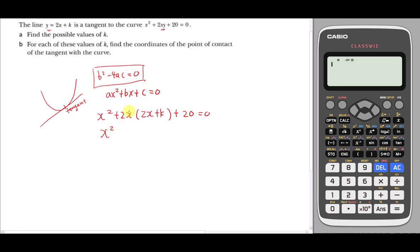This one should be x²; 2x multiplied by 2x will be 4x². 2x multiplied by k will be, normally I will write 2kx rather than 2xk because I want to take my b as 2k. Then the next thing I will do is plus 20 equals zero. I can add x² and 4x² and then it becomes 5x² + 2kx + 20 = 0.